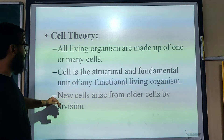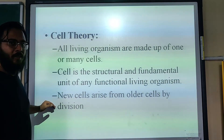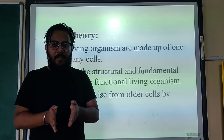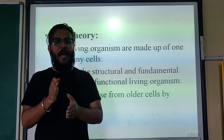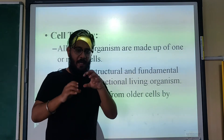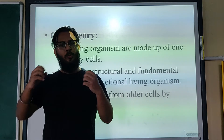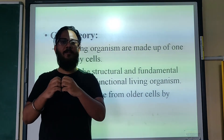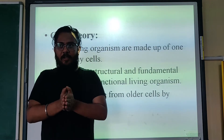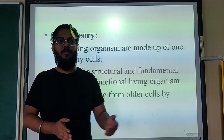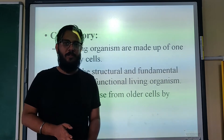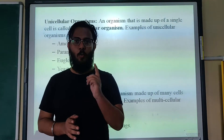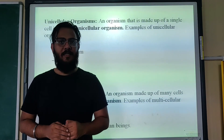The third part of cell theory is: new cells arise from older cells by division. There is no factory in the body that makes new cells. What happens is a cell gets divided into newer cells — the older (parent) cell divides into newer (daughter) cells. You can learn more about this when we study the processes called mitosis and meiosis.